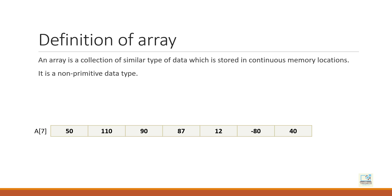Let's start with the definition of array. The definition says: an array is a collection of similar type of data which is stored in continuous memory locations, and it is a non-primitive data type. Before I explain the first line, let me talk about data types. In Java, there are two types of data: primitive and non-primitive.